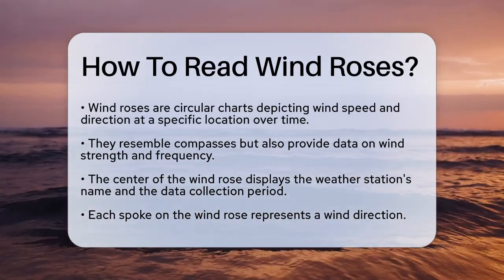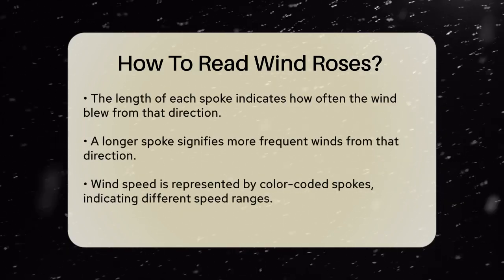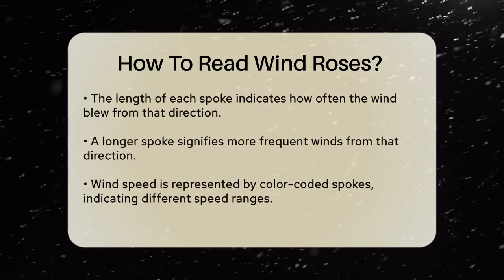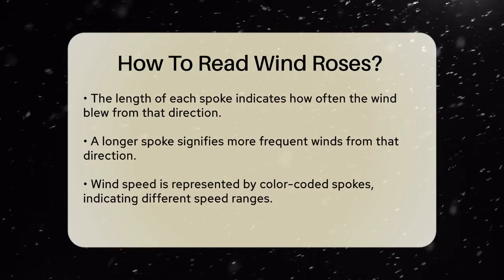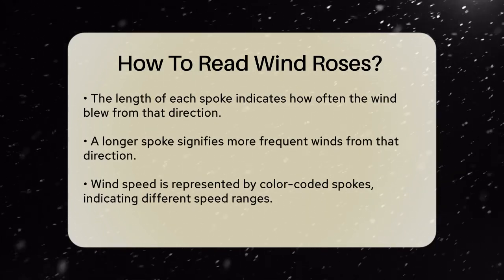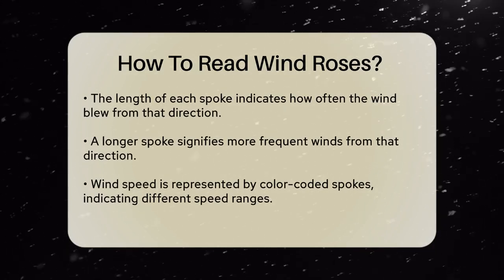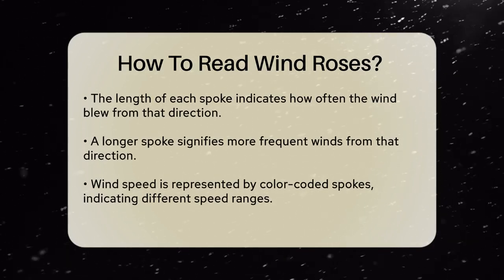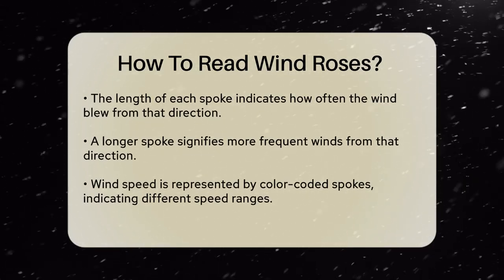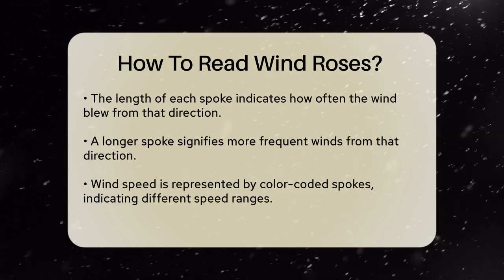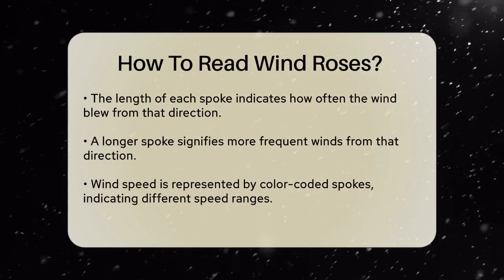Now let's talk about the spokes. Each spoke represents a direction from which the wind is blowing. The length of each spoke indicates how often the wind came from that direction. If a spoke is long, it means the wind blew from that direction more frequently. For instance, if a spoke pointing west is the longest, it means most of the wind came from the west during that time period.